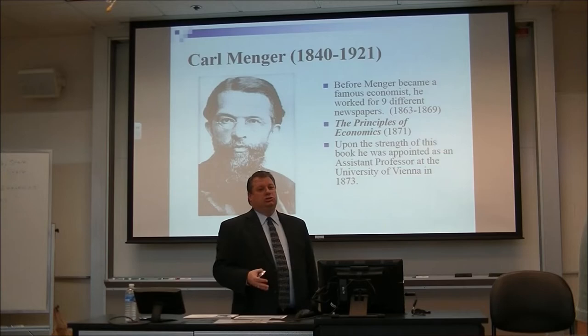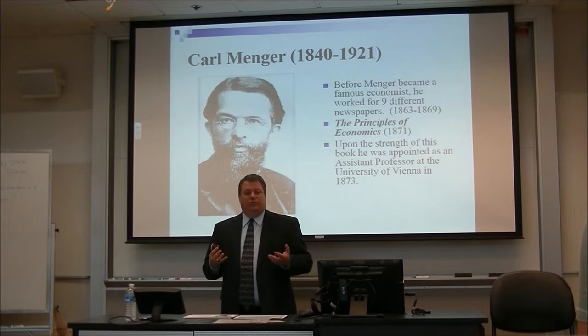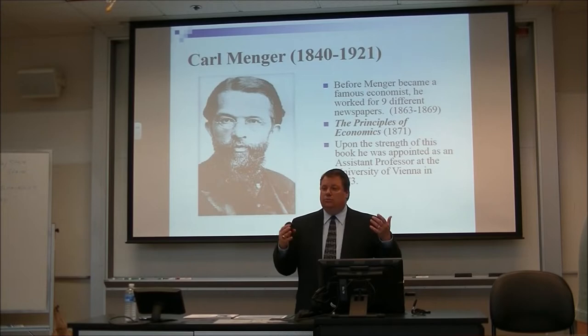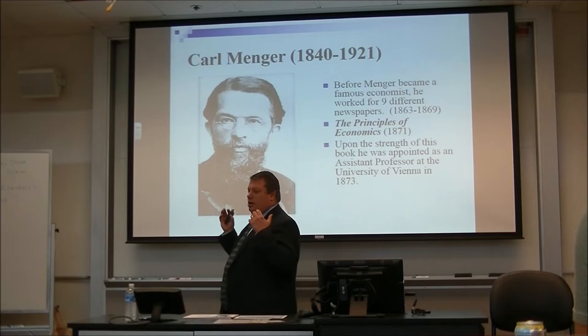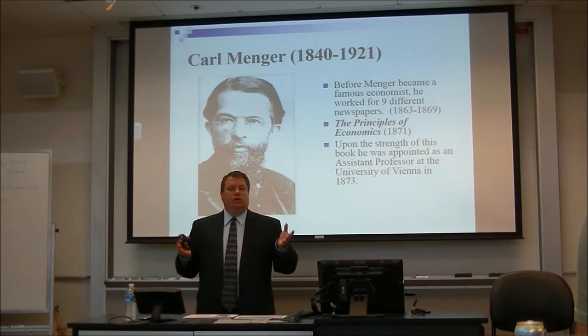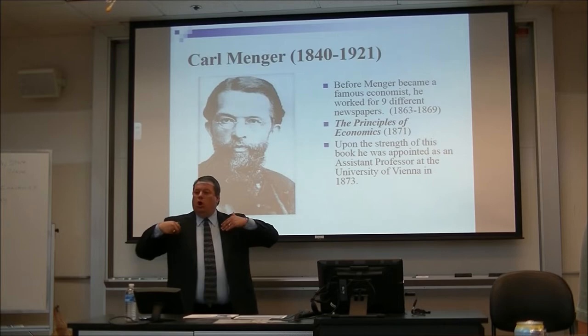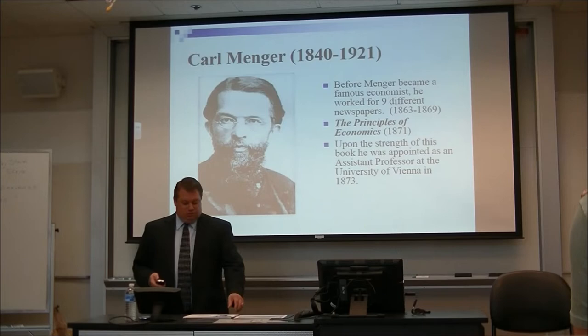At this time, we had three people basically write about the same issue — marginalism, or at the margin. This was Karl Menger in Vienna, Leon Walras with the Lausanne School in 1874, and William Stanley Jevons in England in 1871. They all were basically overturning what the classicals were saying. Based upon the strength of his book, Menger was actually awarded an assistant professorship at the University of Vienna.